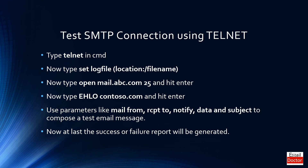To test the SMTP connection using telnet, open CMD and type 'telnet', then type 'set logfile <location>:<filename>'. Now type 'open mail.abc.com 25' and press Enter. Then type 'HELO contoso.com' and press Enter. Use parameters like MAIL FROM, RCPT TO, NOTIFY, DATA, and SUBJECT to compose a test mail message. A success or failure report will then be generated.